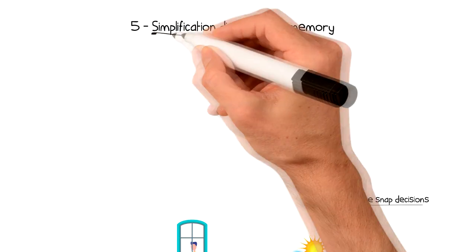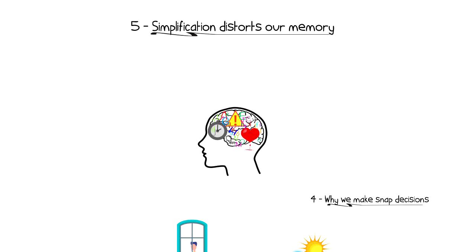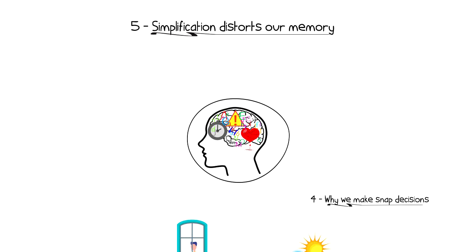Number five, simplification distorts our memory. Our mind is constantly trying to simplify things in order to remember them, but this process enables us to make more mistakes. If you think about events in the past, it's likely that you only remember the key moments of it.